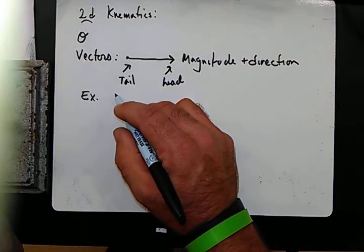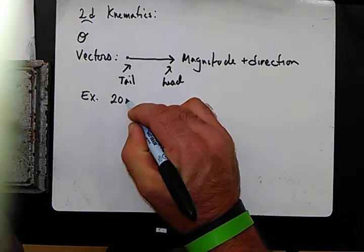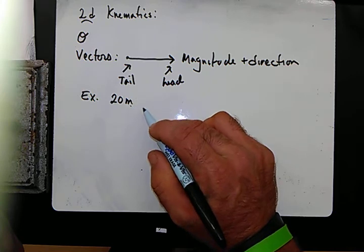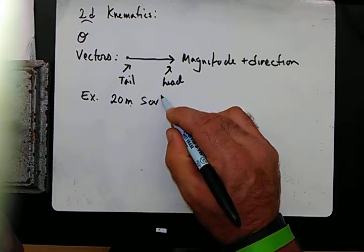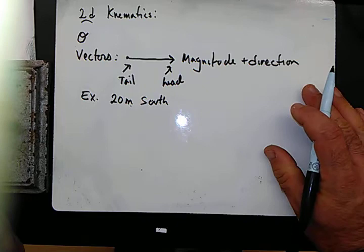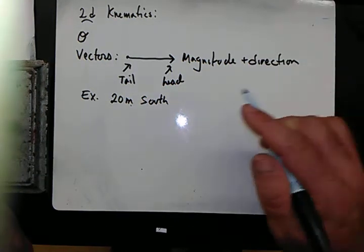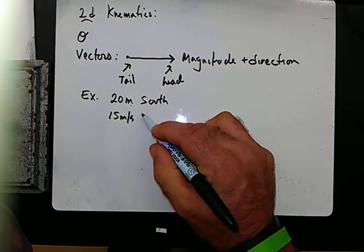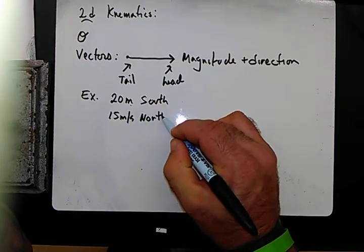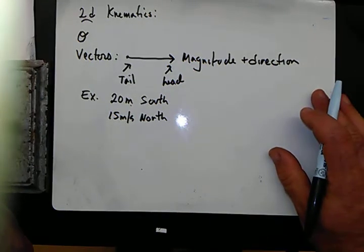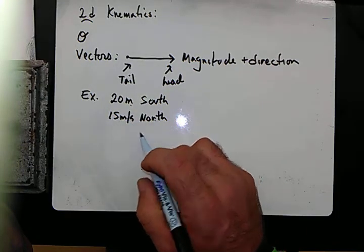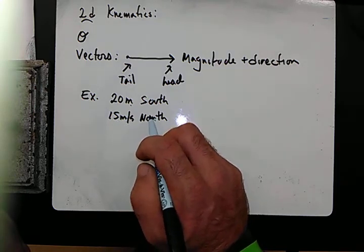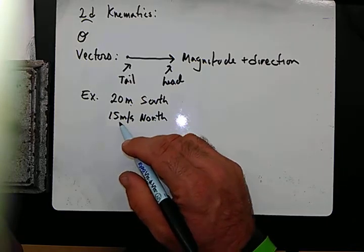One example is 20 meters. This is our magnitude portion. 20 meters south. Another example could be 15 meters per second north. This is our magnitude, this is our direction. Remember it's not a vector if it doesn't have a direction. Let's take a look at another one.